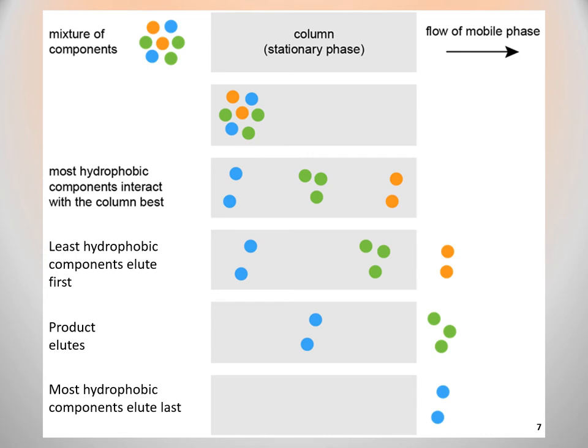After the elution of polar components, the non-polar or hydrophobic components will be eluted on the basis of their affinities towards the stationary phase — the most hydrophobic components interact with the column best and the least hydrophobic components will elute first. The same thing happens in normal phase chromatography, where the stationary phase is polar. The polar components of the mixture will have a strong affinity towards the stationary phase, and in this case the non-polar components will be eluted first, followed by the elution of polar components.